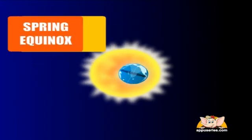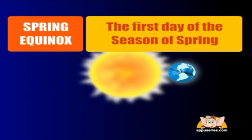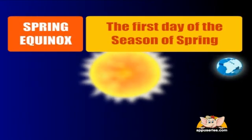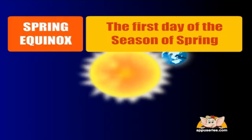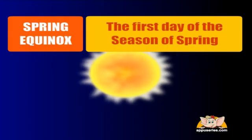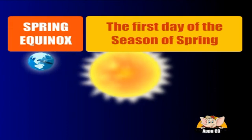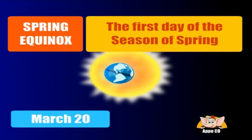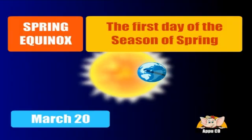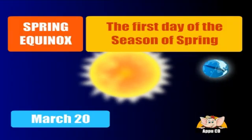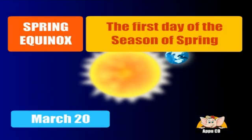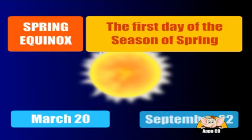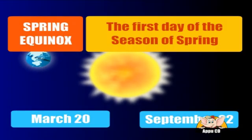Spring Equinox — the first day of the season of spring and the beginning of a long period of sunlight at the pole. In the Northern Hemisphere, March 20th, the Sun crosses the equator moving northward. In the Southern Hemisphere, September 22nd, the Sun crosses the equator moving southward.